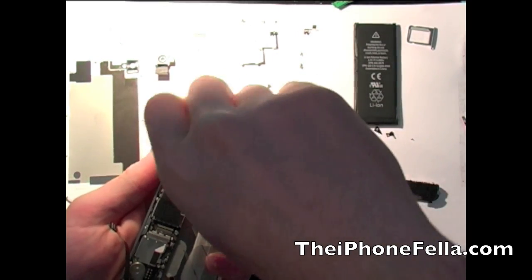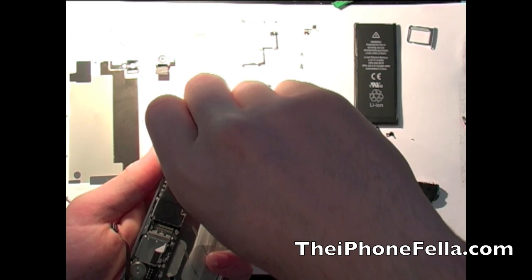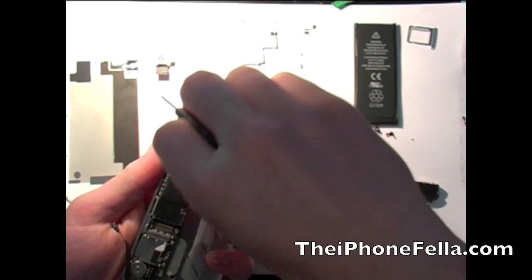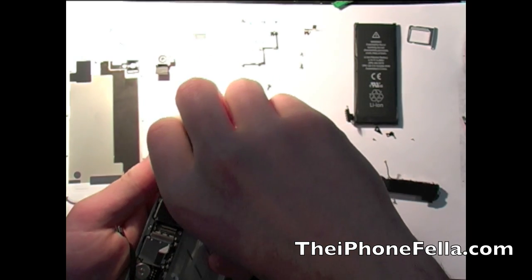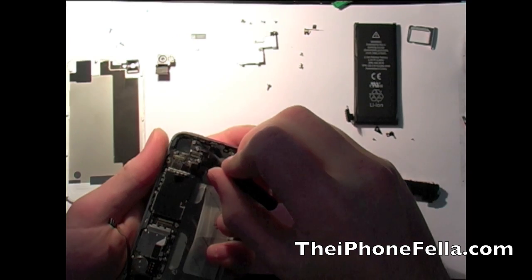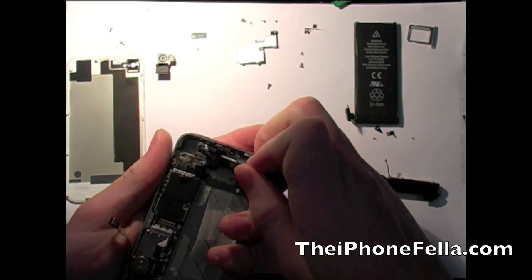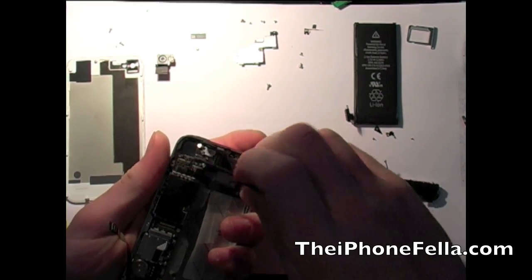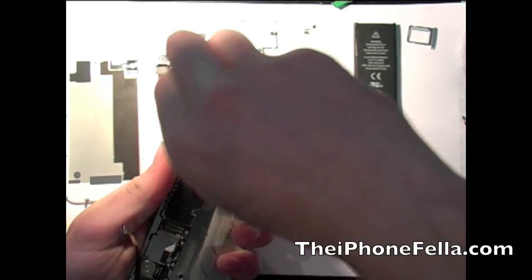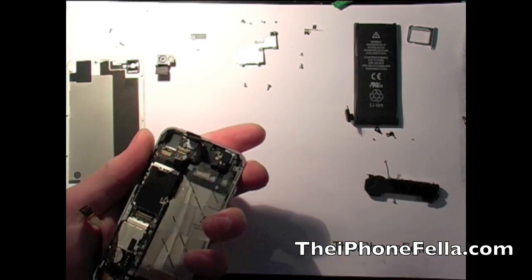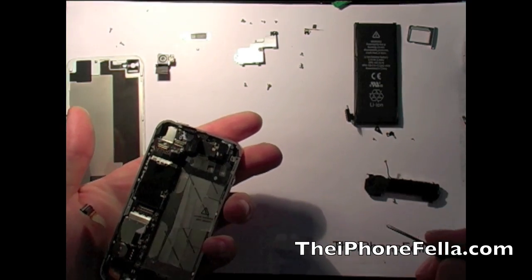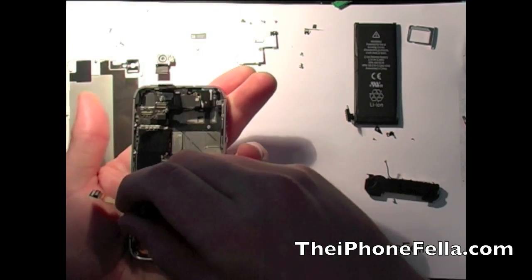There is a screw on the logic board hidden under some black tape. Once you have removed this tape, take note that you are voiding your warranty. There is still one screw located by the vibrator at the bottom of the logic board. Go ahead and remove that.